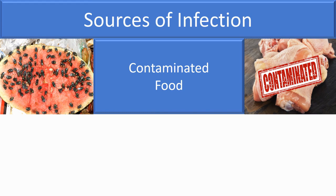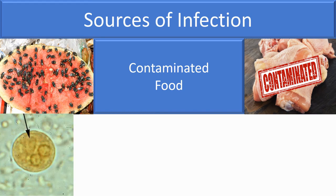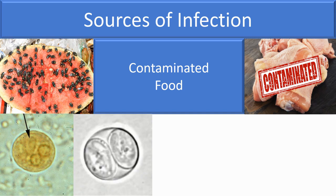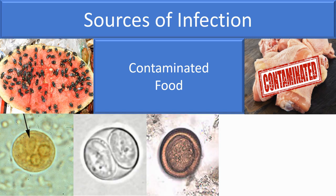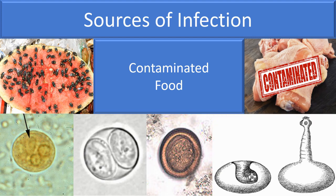Another source of infection is ingestion of vegetables containing infective stages of parasites — for example, amoebic cysts, Toxoplasma oocysts, and eggs of Echinococcus granulosus. Also, ingestion of raw or undercooked meat harboring infective larvae — for example, measly pork containing Cysticercus cellulosae, the larval stage of Taenia solium.